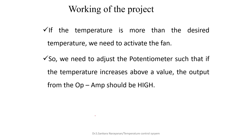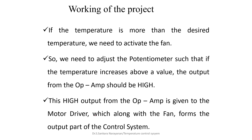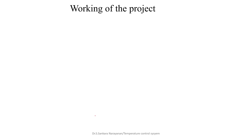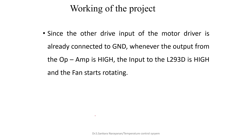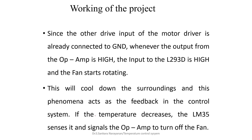If the temperature increases above the set value, the output from the operational amplifier goes high. This high output is given to the motor driver, and along with the fan, it forms the output part of the control system. Since the other driver input of the motor driver is already connected to ground, whenever the operational amplifier output is high, the input to the L293D is high, the fan starts rotating, and it cools down the surroundings. This phenomenon acts as the feedback in the control system — whenever the temperature decreases, the LM35 sensor senses it and signals the operational amplifier to turn off the fan.